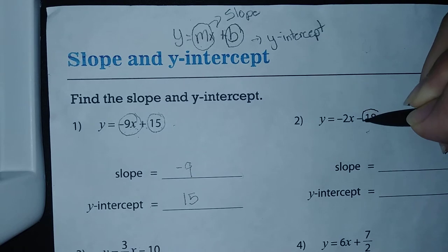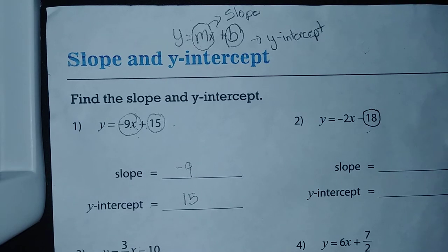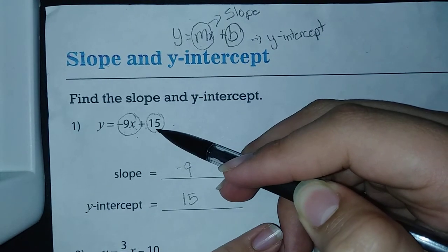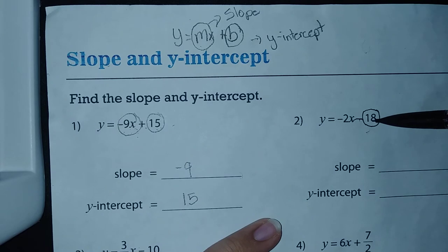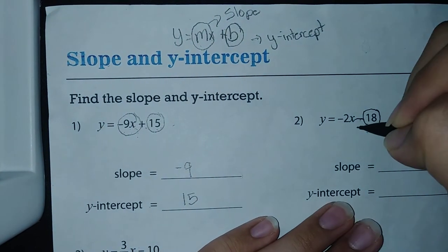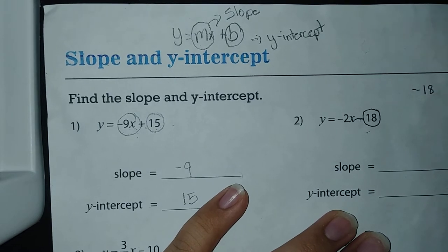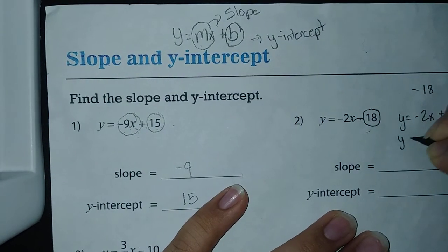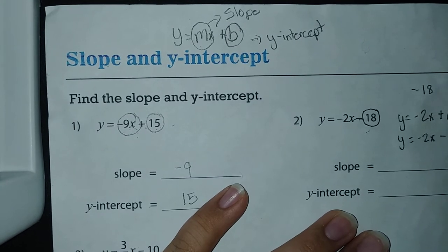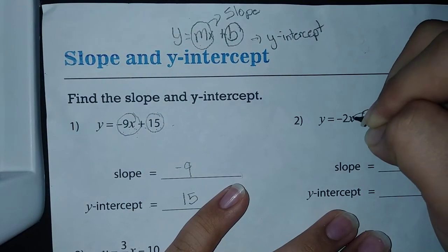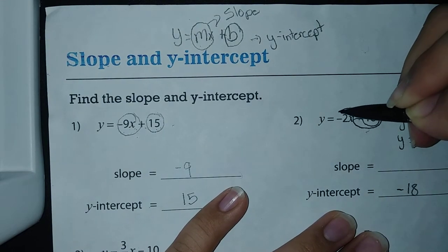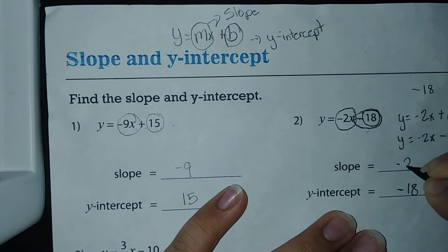Number two: y = -2x - 18. Remember the y-intercept is at the far right. When there's a plus sign the y-intercept is positive; when there's a minus sign the y-intercept is negative. If we wrote this fully it would be y = -2x + (-18), but they simplified it to y = -2x - 18. So the y-intercept is -18, and the slope is -2.